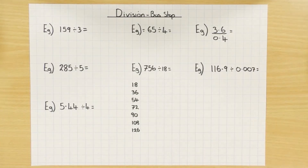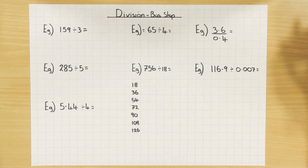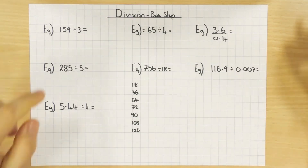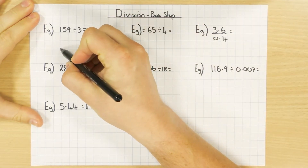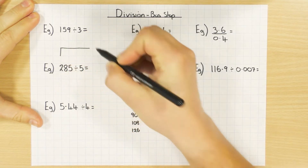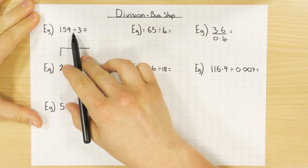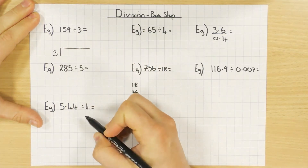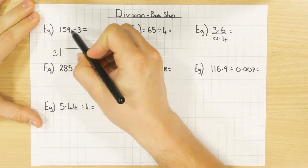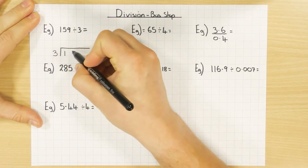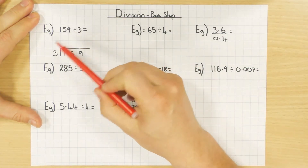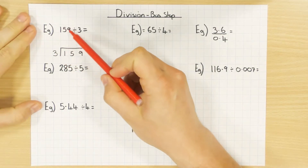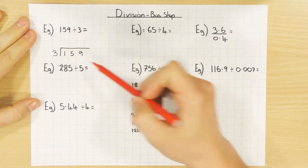In this video we're going to look at how we do division using the bus stop method, and we're also going to include a few decimals. So we'll start off with 159 divided by 3. We set it up using the bus stop: whatever you're dividing by goes on the outside, and the number you are dividing goes inside the bus stop.